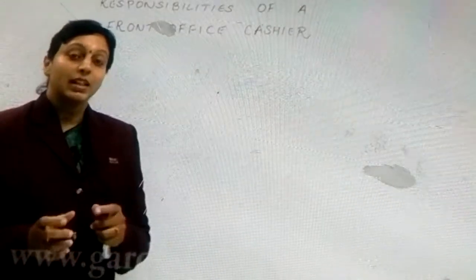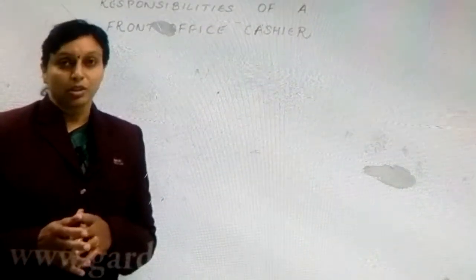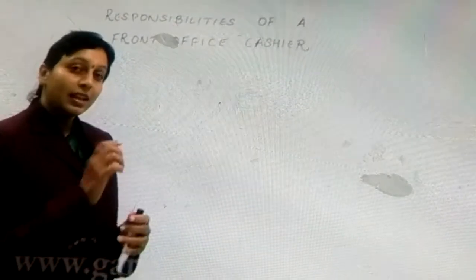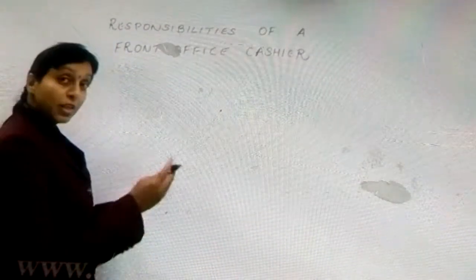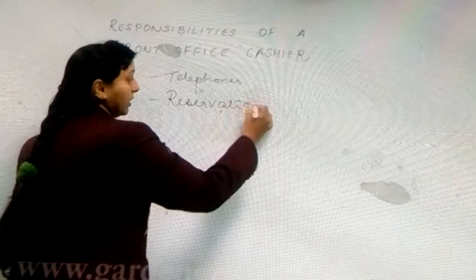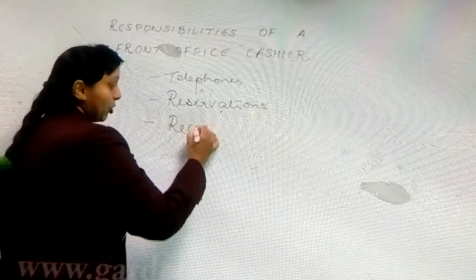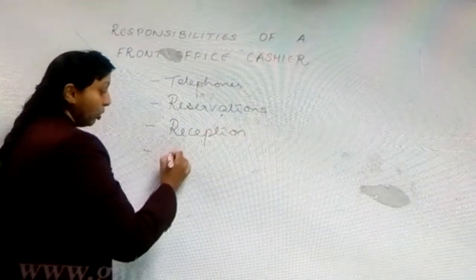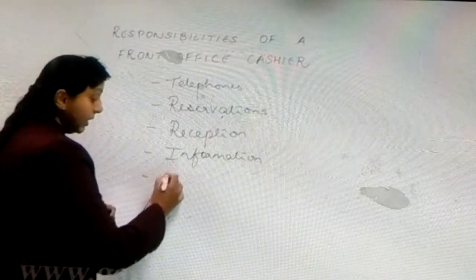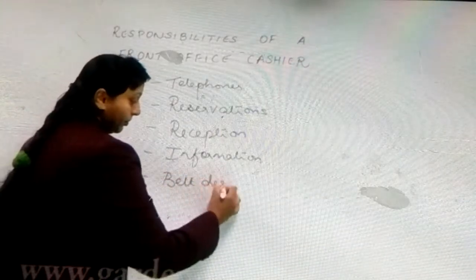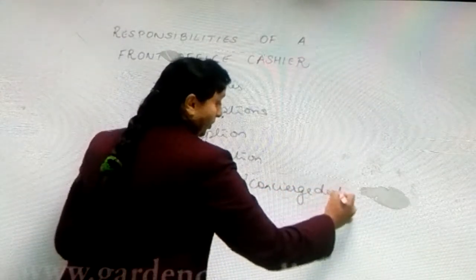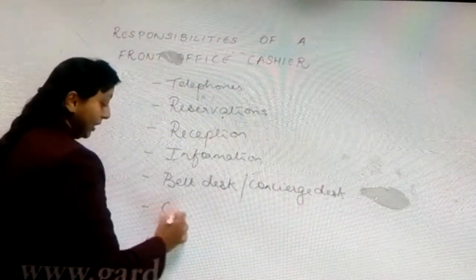Front office, as the name suggests, is basically in the front of the hotel, or front of the house. Front office is divided into different sections. The sections are: telephones, reservations, reception, information, bell desk or concierge desk, and the last one — our main topic — the cash section.